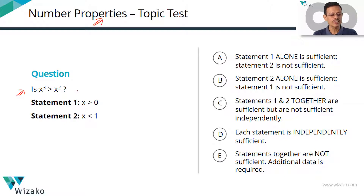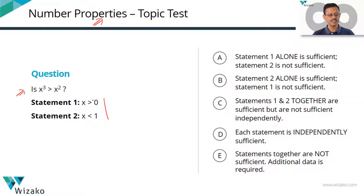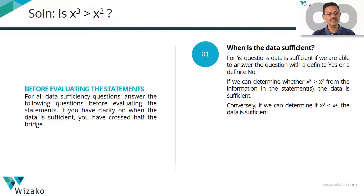Every time in future you get a question that asks you to compare two indices of a variable, apply the standard framework and you'll get the correct answer without fail for any of these questions. Let's get started. The question is asking us to find out whether X cubed is greater than X squared. As with any DS question, before we evaluate the statements, start getting an idea about what kind of question this is and what kind of answer it will fetch.